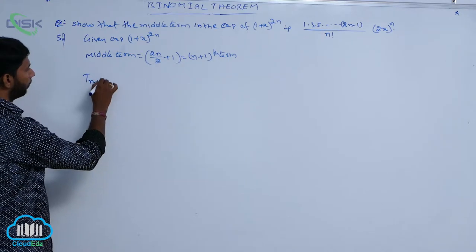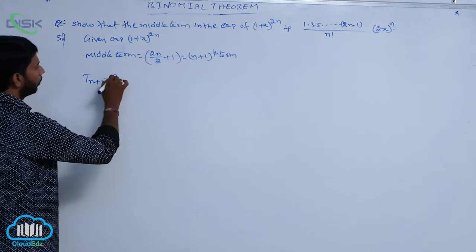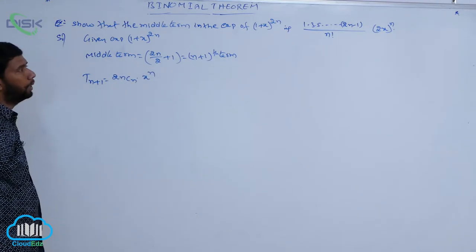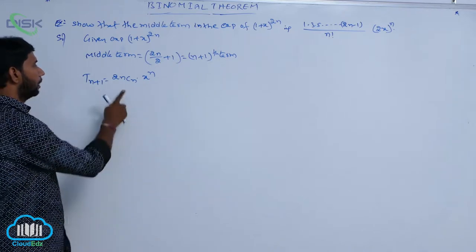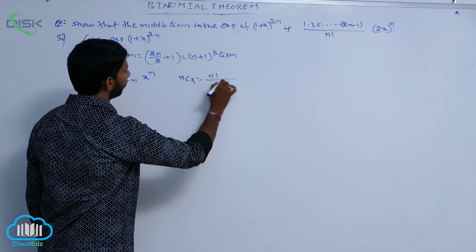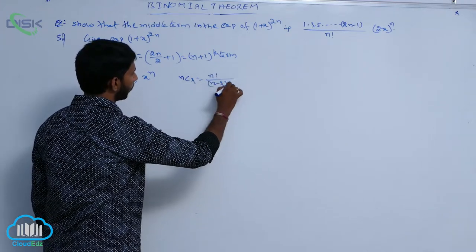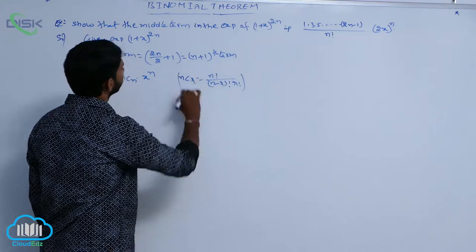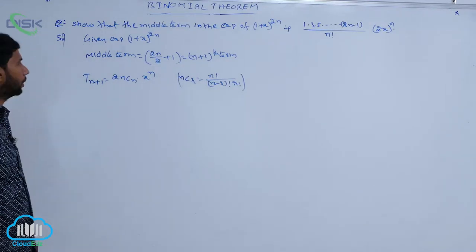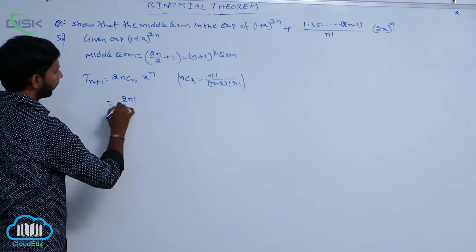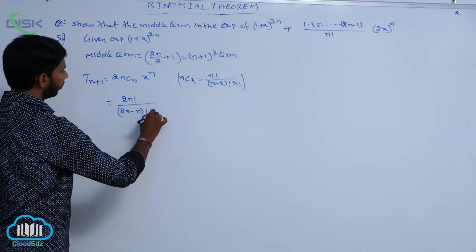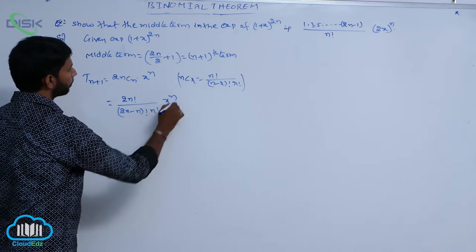Therefore, T(n+1) = 2nCn · x^n. Using the formula nCr = n! / [(n−r)! · r!], this becomes 2n! / [(2n−n)! · n!] · x^n, that is 2n! / [n! · n!] · x^n.